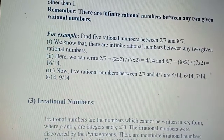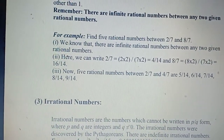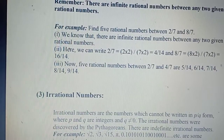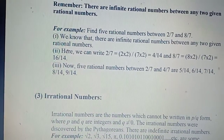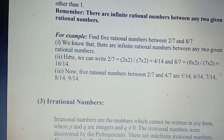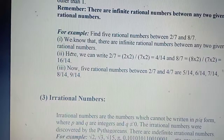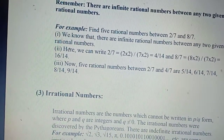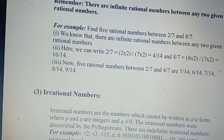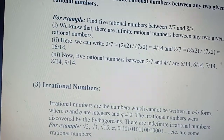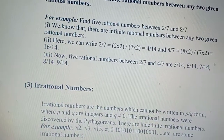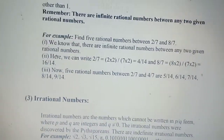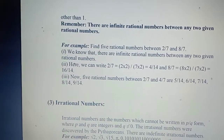If denominators are not the same, the first step is to make the denominators equal by taking the LCM. The second step is to make equivalent rational numbers of both given rational numbers. So 2/7 is written as 4/14, and 8/7 can be written as 16/14. Now we can easily find 5 rational numbers between 4/14 and 16/14, that is: 5/14, 6/14, 7/14, 8/14, and 9/14. We can solve similar examples using this method.